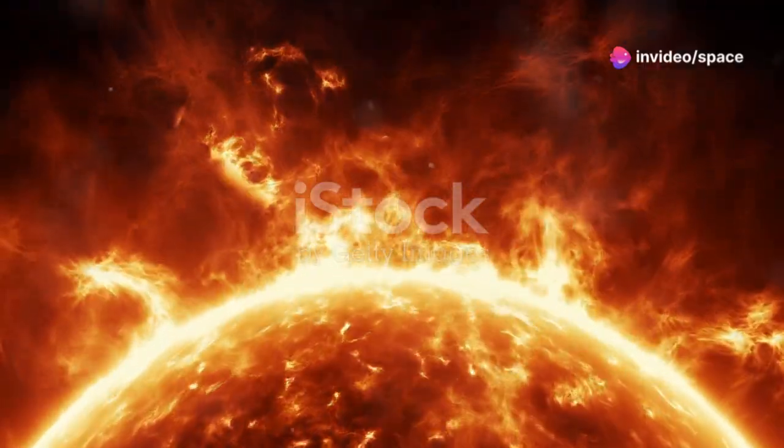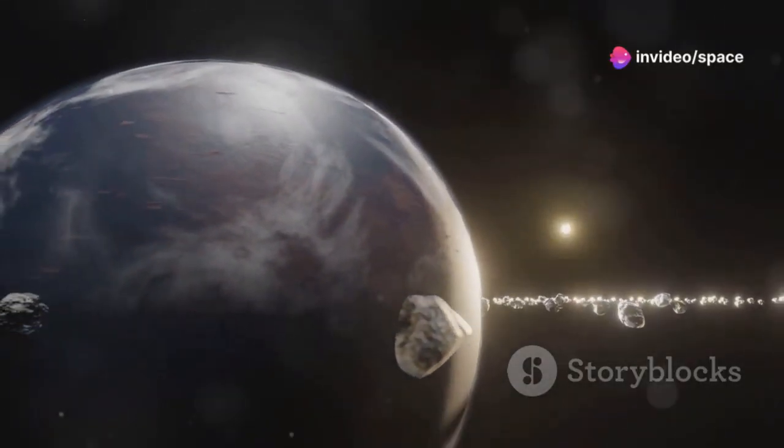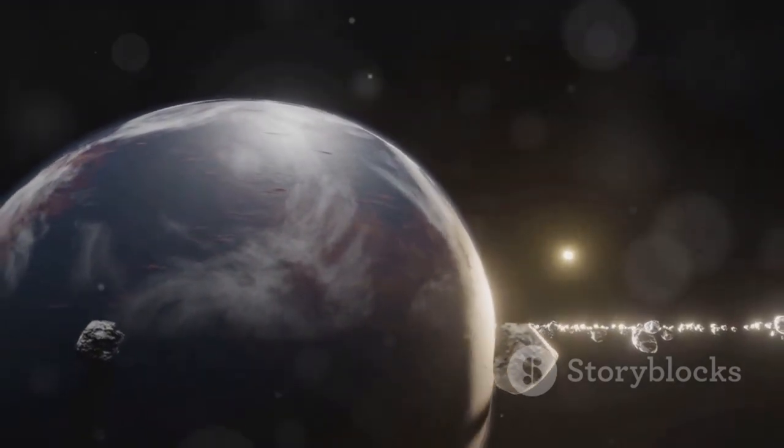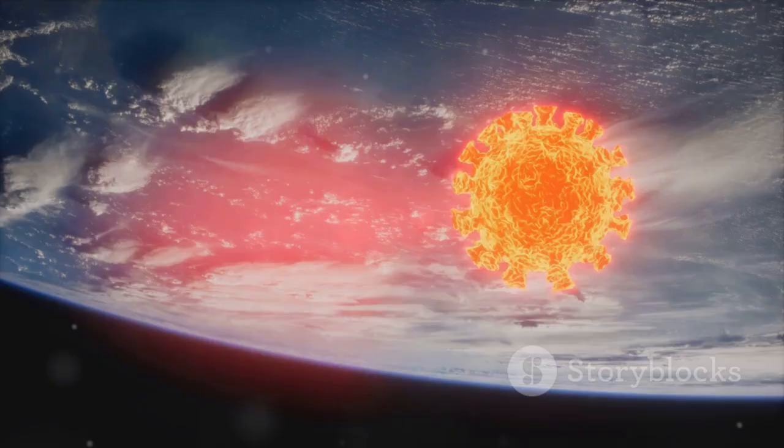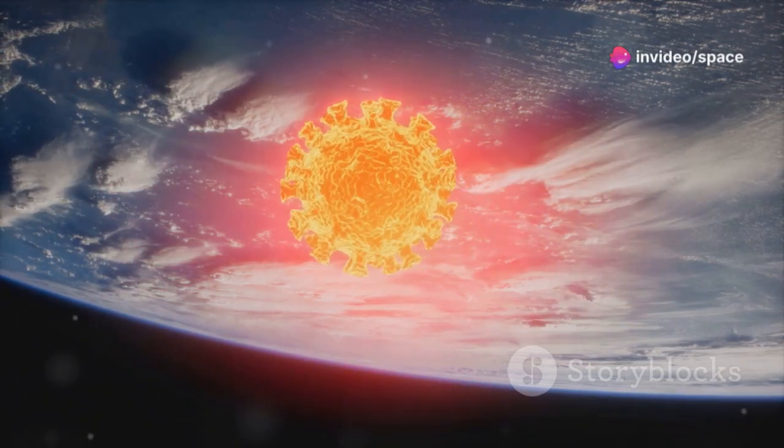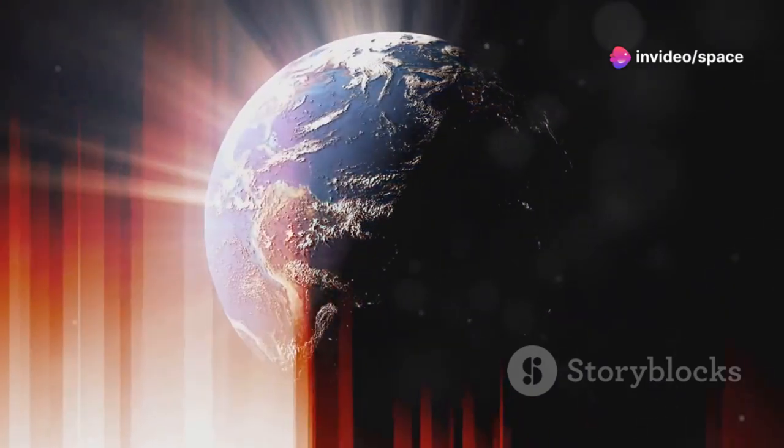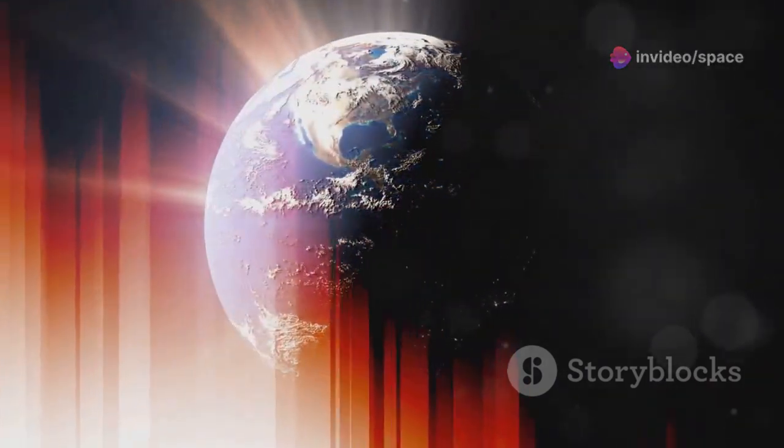That's the kind of energy we're talking about. Imagine being bathed in a sudden, intense burst of energy. For any life forms or even the planet's atmosphere, this could be catastrophic. The energy from these flares can strip away protective layers and expose the surface to harmful radiation. That's what life on Proxima b would have to contend with, potentially on a regular basis.